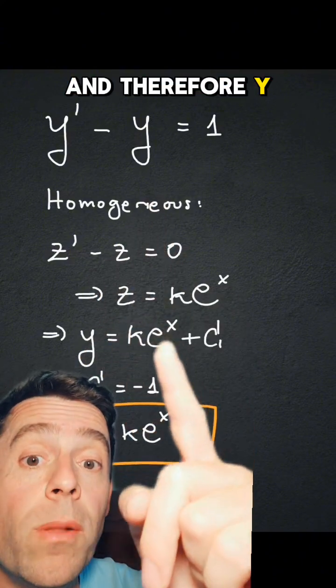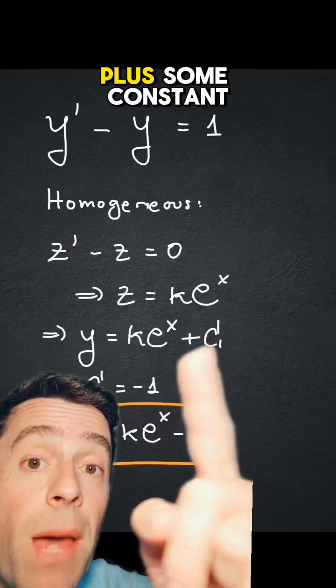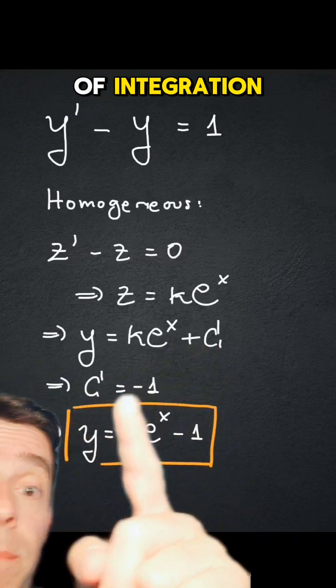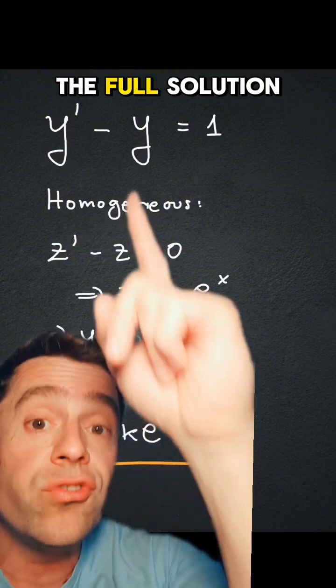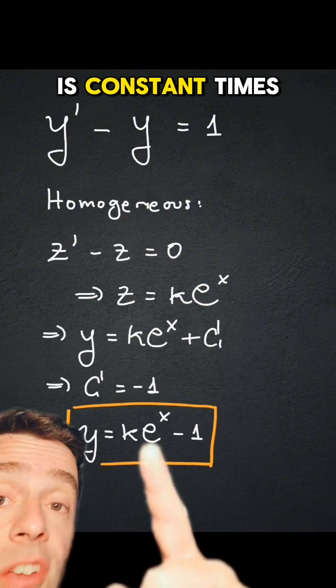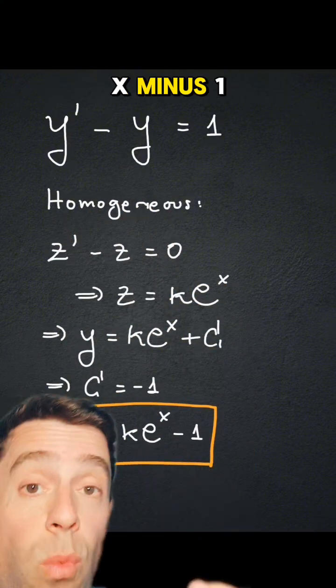And therefore, y will be that solution plus some constant of integration, which in this case is minus 1. And therefore, the full solution for that equation is constant times e to dx minus 1.